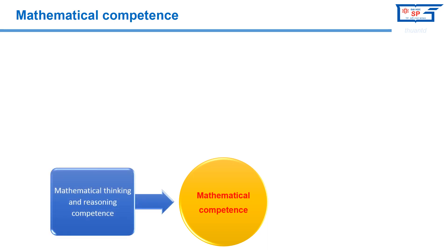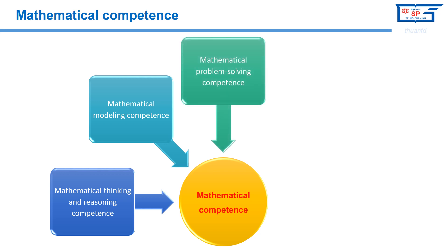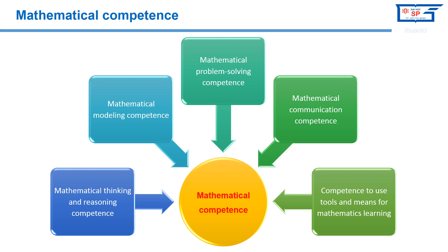The five components are: Mathematical Thinking and Reasoning Competence, Mathematical Problem-Solving Competence, Mathematical Communication Competence, and Competence to Use Tools and Means for Mathematics Learning.